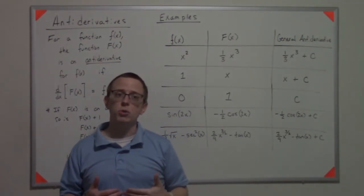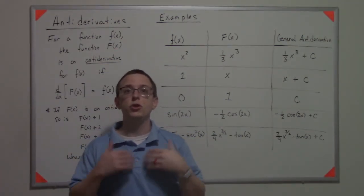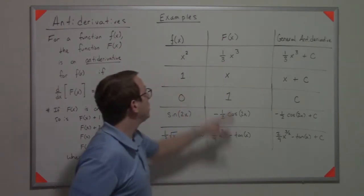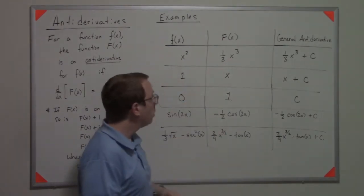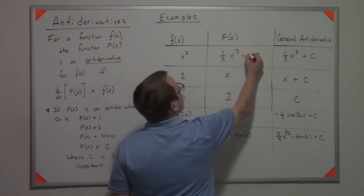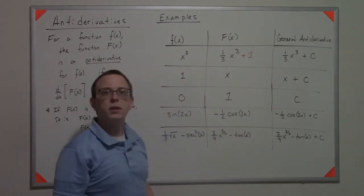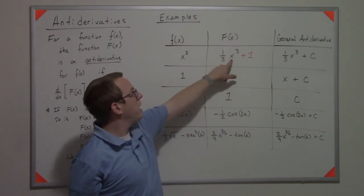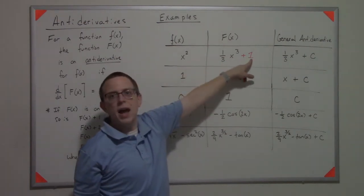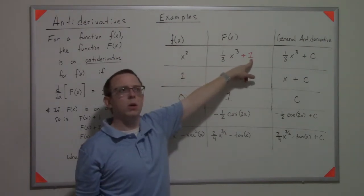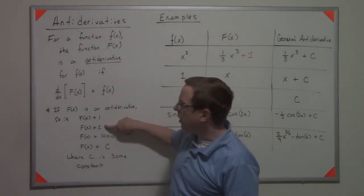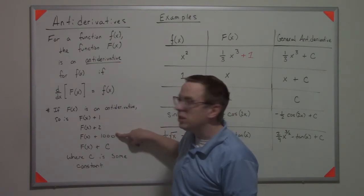One thing that's really interesting is that the constant rule about derivatives says the derivative of a constant is always zero. For instance, if this was x³ + 1, the derivative here would still be—the 3s would cancel and you end up with x², but that derivative would be zero.